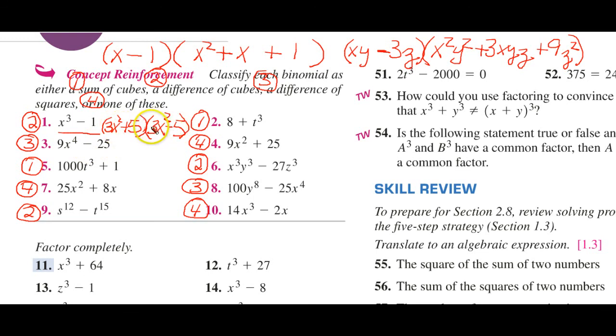And which other one do we have here? How about none of these? Well, this is a perfect square. This is a perfect cube. And there are no common factors except an x.